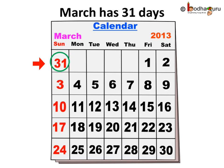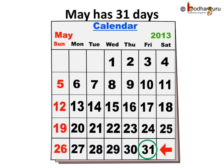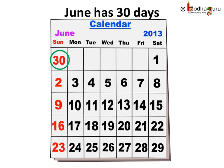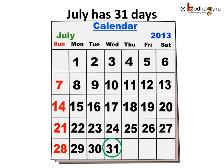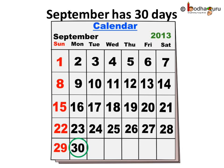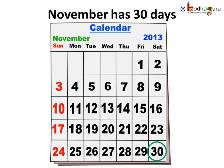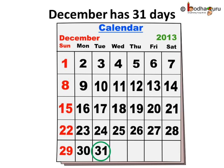March has 31 days. April has 30 days. May has 31 days. June has 30 days. July has 31 days. August also has 31 days. After August comes September, which has only 30 days. October has 31 days. November has 30 days. December has 31 days, so 31st of December is the last day of the year.